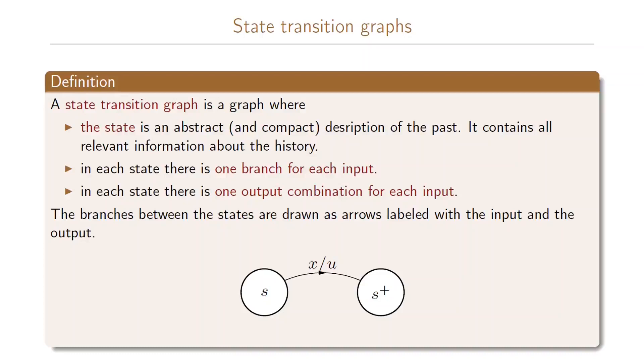When we make our states we write them in this way: we make a circle and then define the state with some name. For each of the states we will have one branch that goes out of the state for each of the possible inputs.